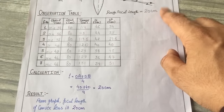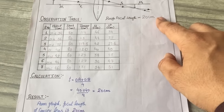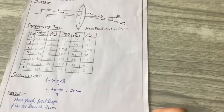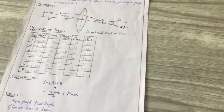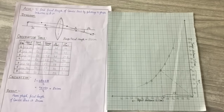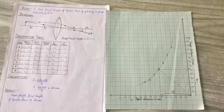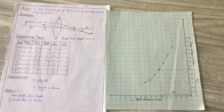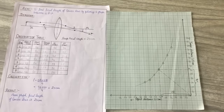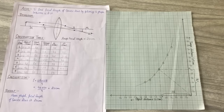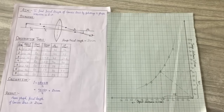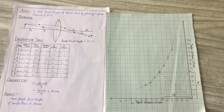Our focal length comes out to be 20 cm, which matches our rough focal length. So our experiment is complete — the final focal length is 20 cm. I hope you found this video helpful. Don't forget to share it with your friends. We'll meet in the next video with a new experiment. Till then, keep applying physics in your daily life. Jai Hind, Jai Bharat!